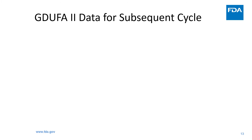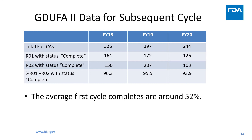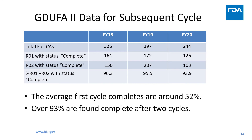Let's look at some GDUFA-2 subsequent cycle CA data. Here you see cycle 1 completes and cycle 2 completes for the last three fiscal years. Take a look at FY18 data: we completed 326 full CAs. Out of those, 164 were found complete during first cycle and an additional 150 were found complete during cycle 2. After combining cycle 1 and cycle 2, over 96% were found to be complete. Similar results were seen during FY19 and FY20. Over 93% of DMFs were found complete just after two CA cycles, meaning the overall CA performance is excellent.